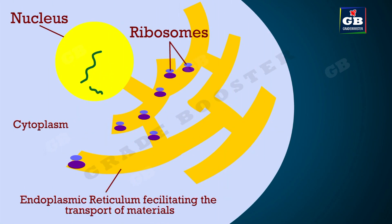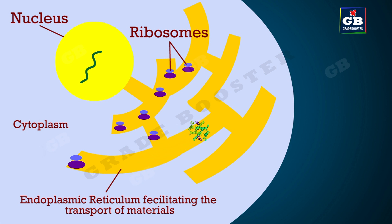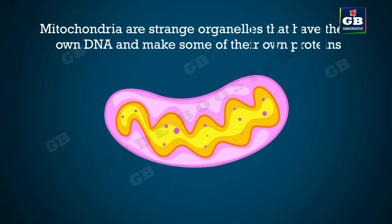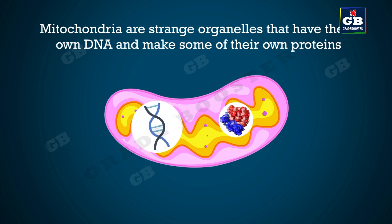Generally in a cell, the nucleus has DNA and it passes information to cell organelles like the endoplasmic reticulum to make proteins necessary for cellular activities. That means all the cell organelles follow the instructions of the nucleus. But in the case of mitochondria, it is a bit different. Mitochondria have their own DNA and ribosomes, so they can manufacture some of their own proteins. That is why mitochondria are sometimes called strange organelles.